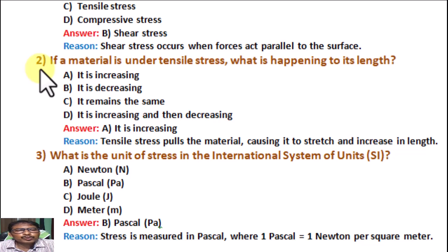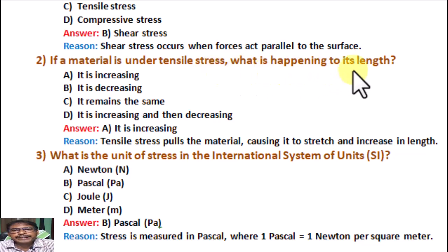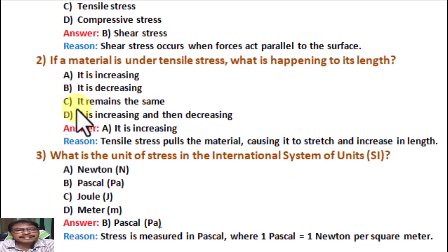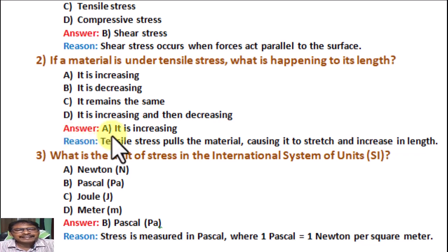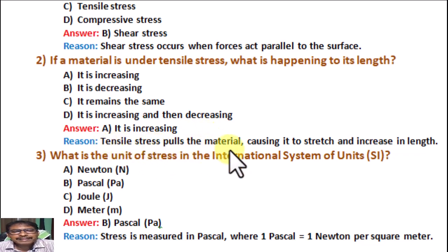Question number 2. If a material is under tensile stress, what is happening to its length? A: It is increasing. B: It is decreasing. C: It remains the same. D: It is increasing then decreasing. Correct answer A: It is increasing. Reason: Tensile stress pulls the material, causing it to stretch and increase in length.